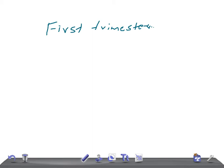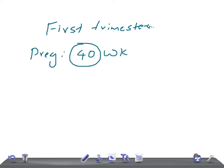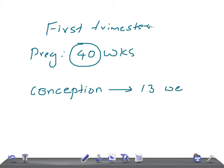Let's talk about the first trimester. If we consider a total gestation of 40 weeks, the first trimester is defined as the period from conception up to 13 weeks.